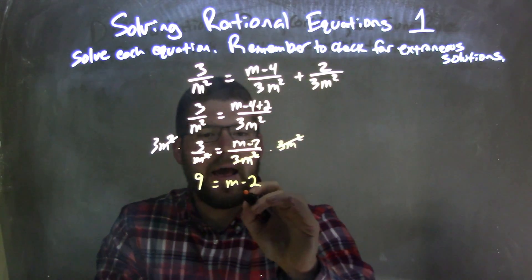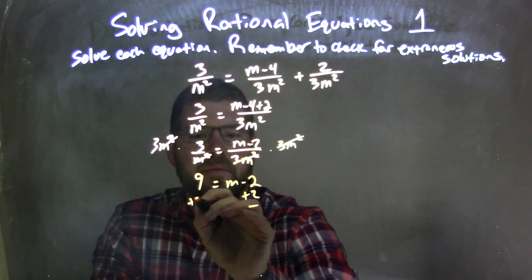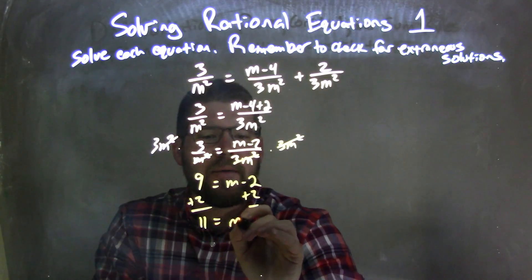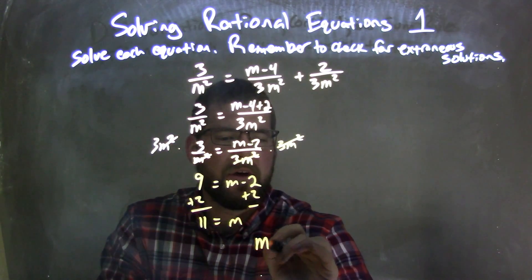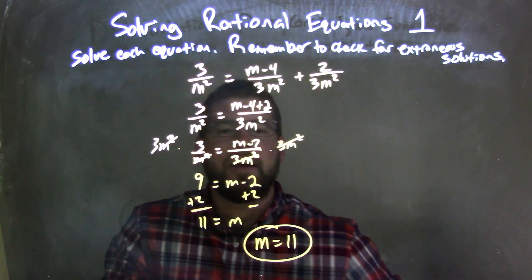So then I'm going to add 2 to both sides, giving me 11 equals m. Rewrite it so m comes first, and m equals 11, and there we have our answer.